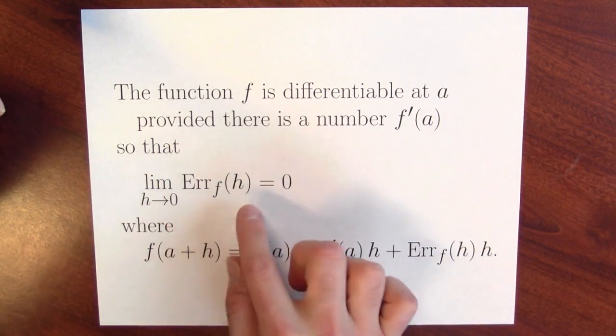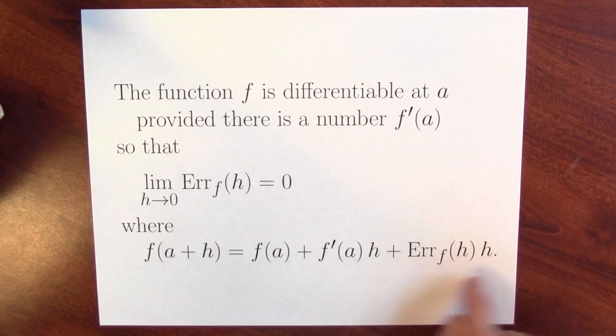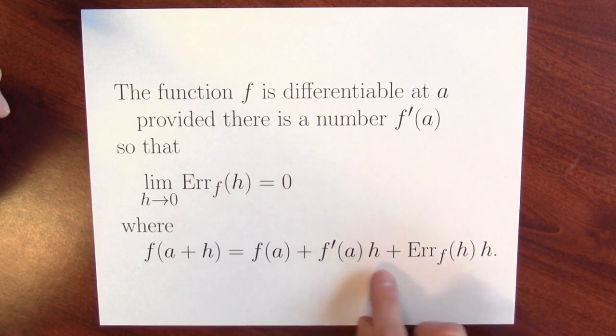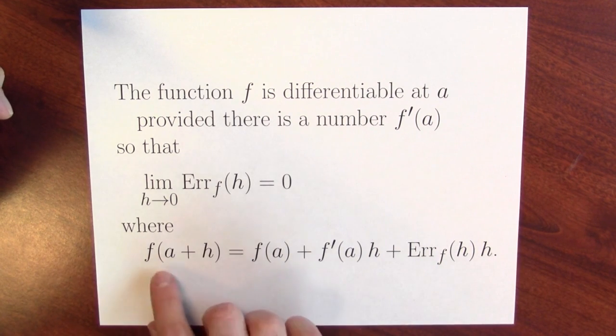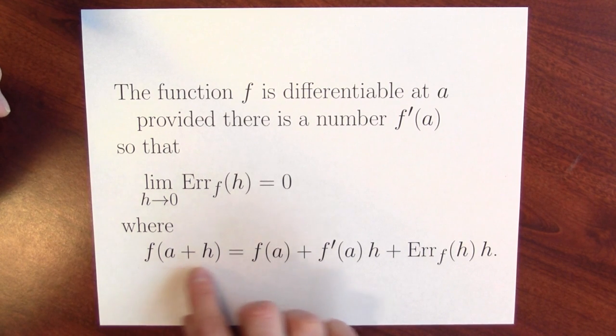So that the limit of this error function is equal to 0. And what's this error function? Well, it's measuring how far my approximation is that I'd get using the derivative from the actual function's output if I plug in an input value near a. In some ways, that's actually a nicer definition of derivative, since it really conveys that the derivative provides a way to approximate output values of functions.